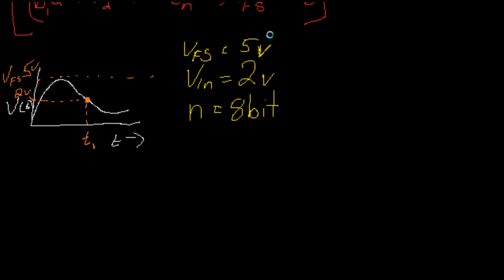So from VFS and the number of bits we could get VLSB, which we need. VLSB is quite simply your VFS over 2 to the n, so it's 5 over 256, and I think we said that comes up to 19.5 millivolts.